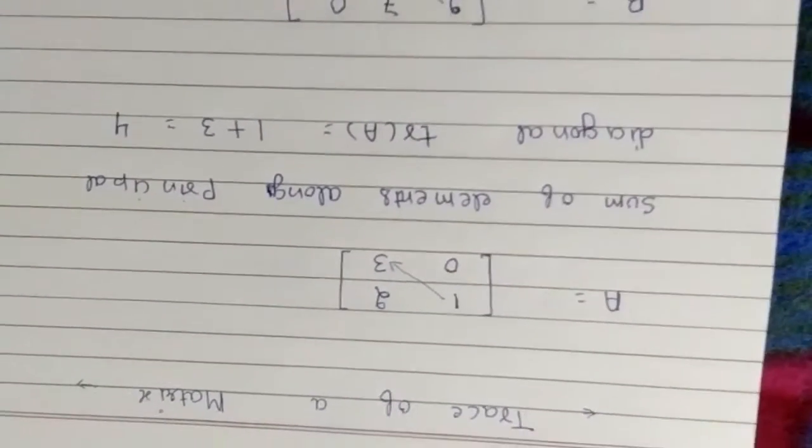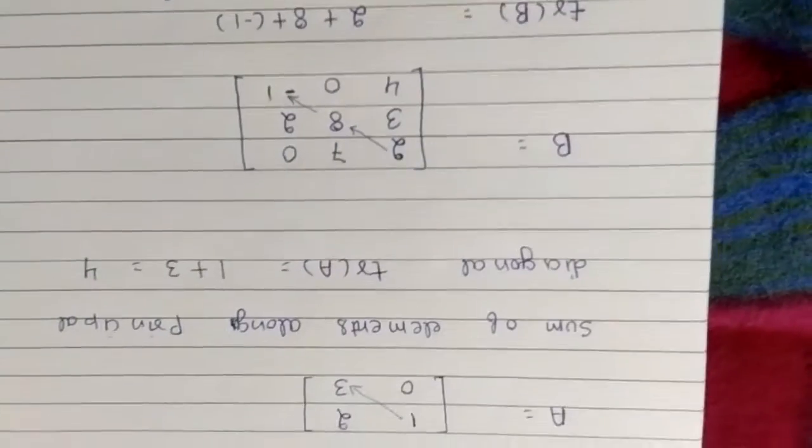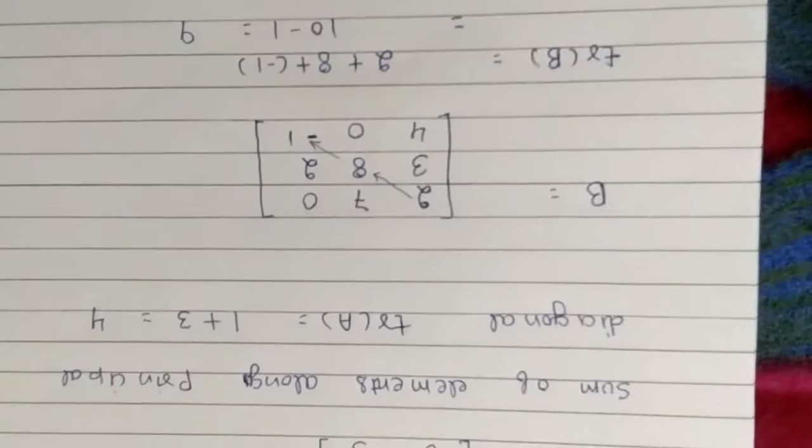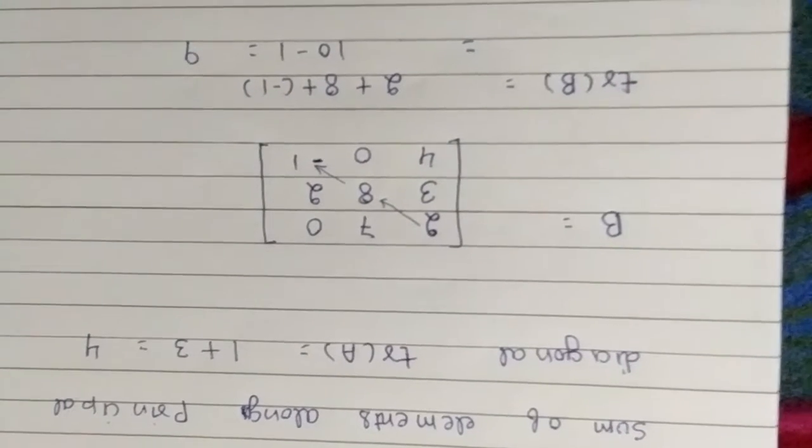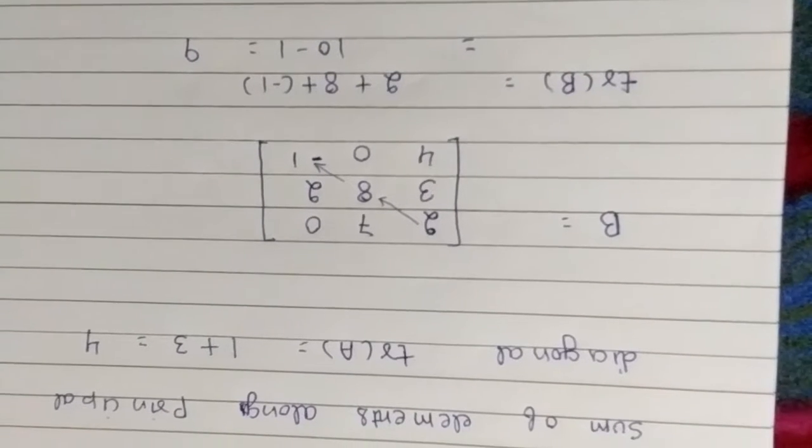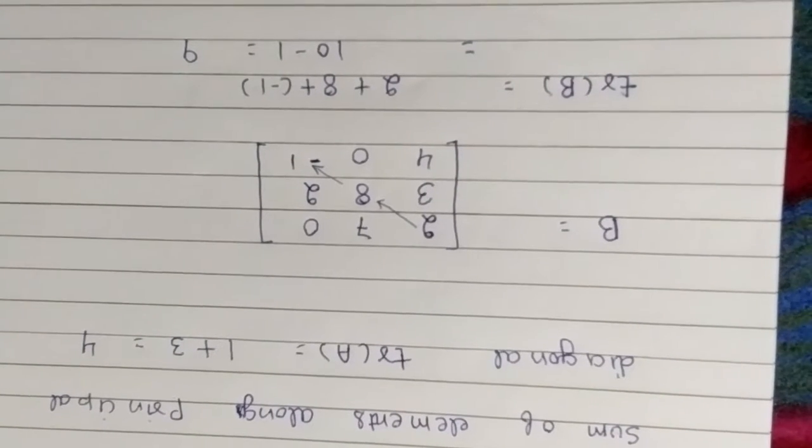Now let me take another example. Suppose B is a matrix given to you, 3 by 3 matrix, and you have to find trace of B. Just you have to add its diagonal elements and you will get 2 plus 8 plus minus 1 will be 9.